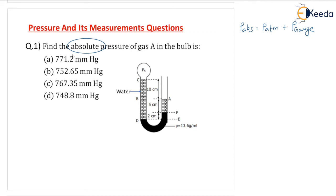The question is very simple: find the absolute pressure of gas A in the bulb. Point A is marked here, and we have to find the absolute pressure of gas A. Looking at the diagram, I can see points A, B, C, and D. The density of the liquid is given as 13.6 gram per milliliter.